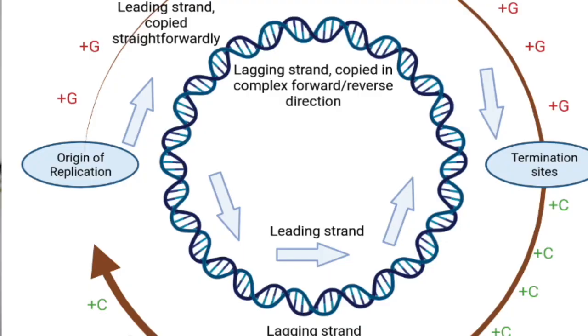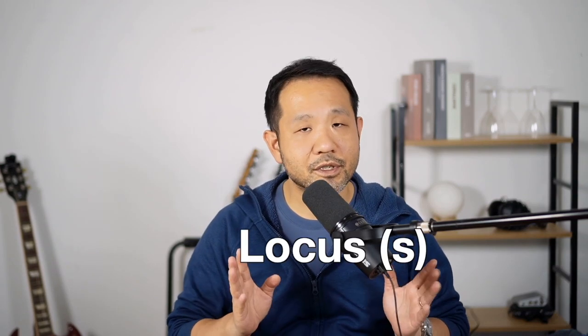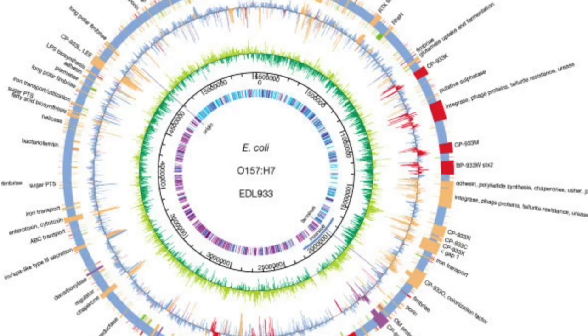Bacteria have a circular chromosome — a long strand of DNA connected at both ends. For E. coli, the genome is typically anywhere between 5, 6, or 7 million base pairs, with thousands of genes strewn across various locations called loci (singular: locus). Bacterial cells have genes that help with survival, such as the ability to produce lactase in the presence of lactose, or genes that confer antibiotic resistance, scattered across those chromosomes.